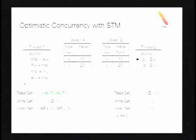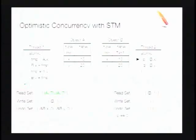Thread 1 finishes and tries to commit. This STM uses eager for writes but lazy for reads, so at commit we validate the read set by walking through it and checking that version numbers haven't changed. In this case, we just have A in the read set and the version number is still 7, so we can commit. We then install a new version number in B — it's back in a read state but incremented by 2 to keep it odd.